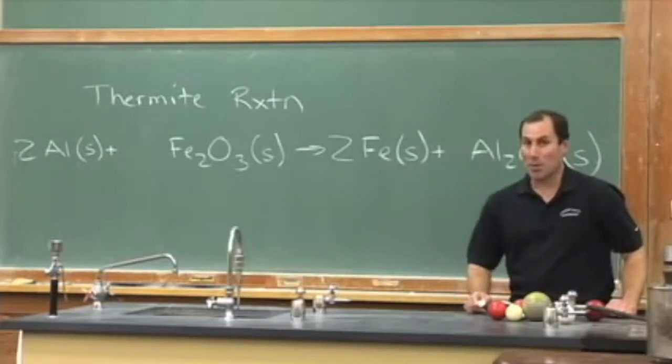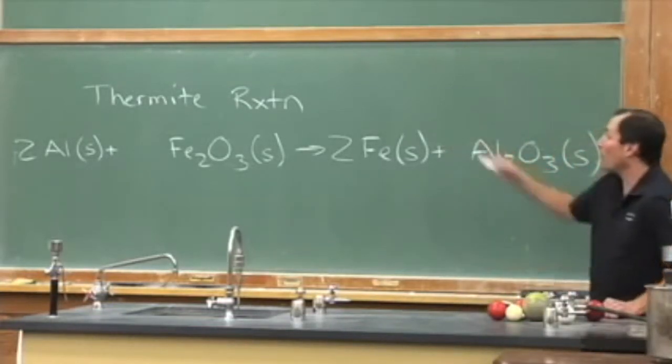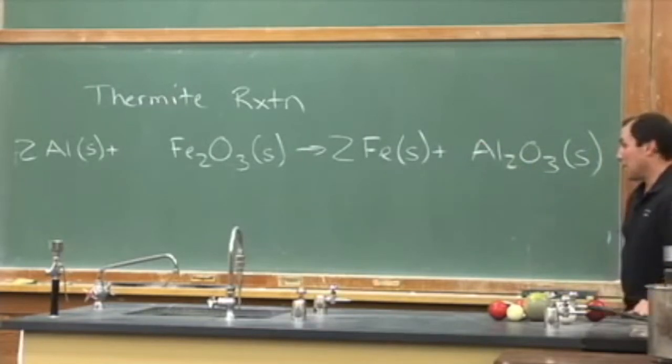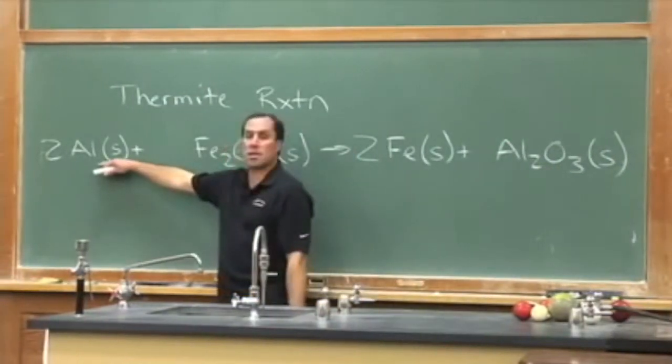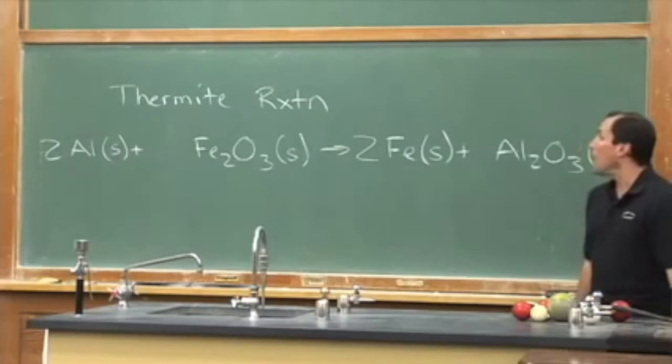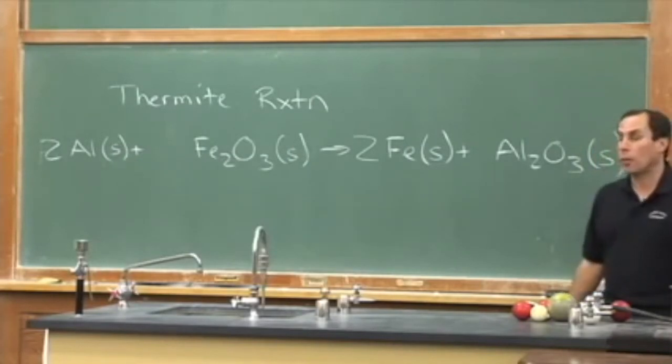Hi, I'd like to do a little demonstration for you. It's known as the thermite reaction with aluminum powder—this is the stuff that aluminum cans are made out of—and this is rust. Here in Oregon we have quite a bit of rust.